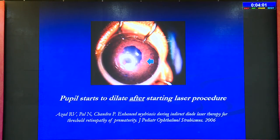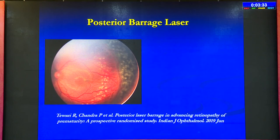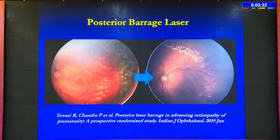An important tip: when the pupil doesn't dilate, consider anti-VEGF first. But if you proceed with laser, once you give the first few spots the pupil will start to dilate — sometimes to 4–5 mm — allowing you to complete at least the posterior part of the procedure. Posterior barrage laser is also performed in some eyes — it provides anchorage and deals with some of the posterior disease areas. It works very well in many of these cases.